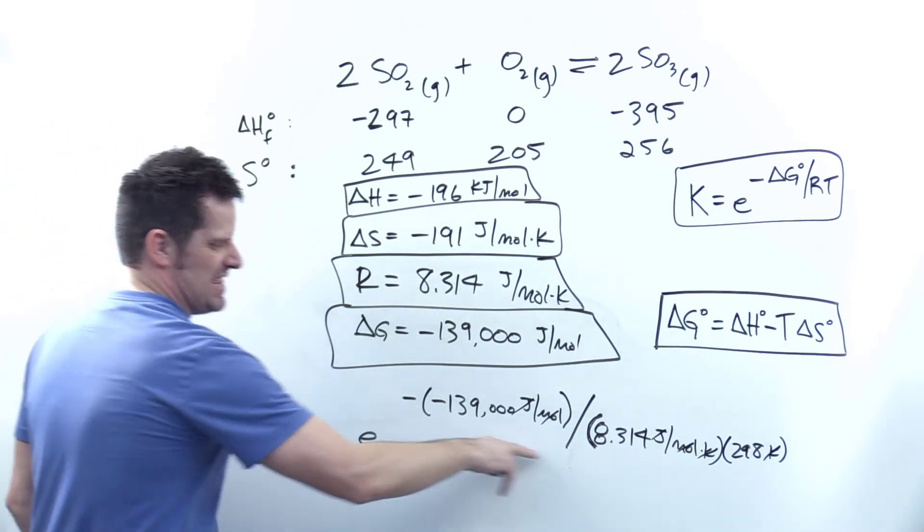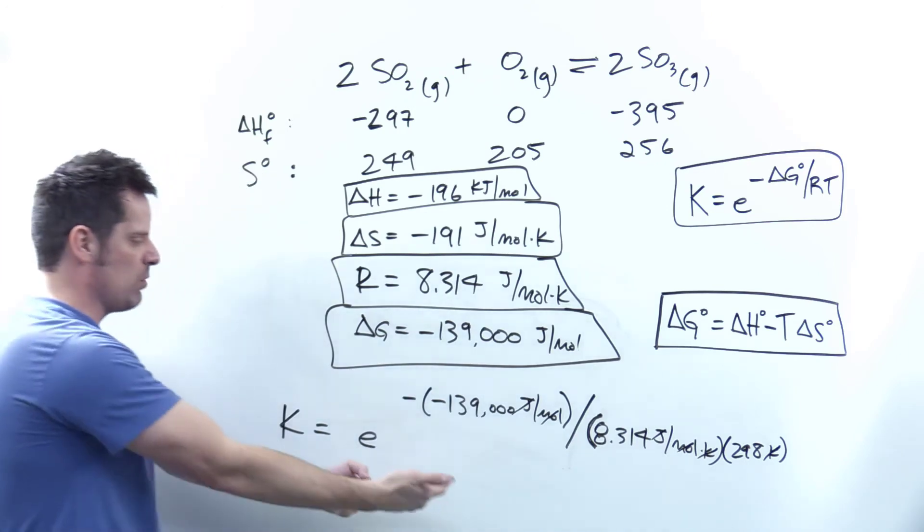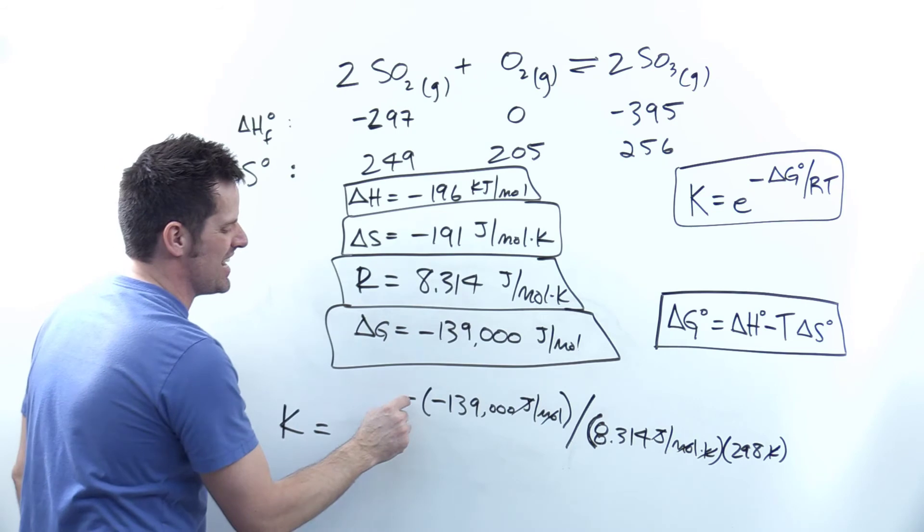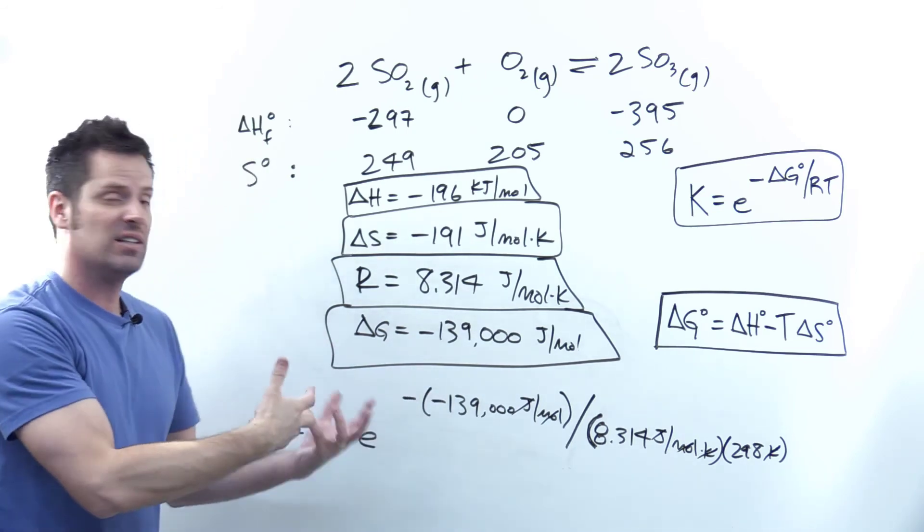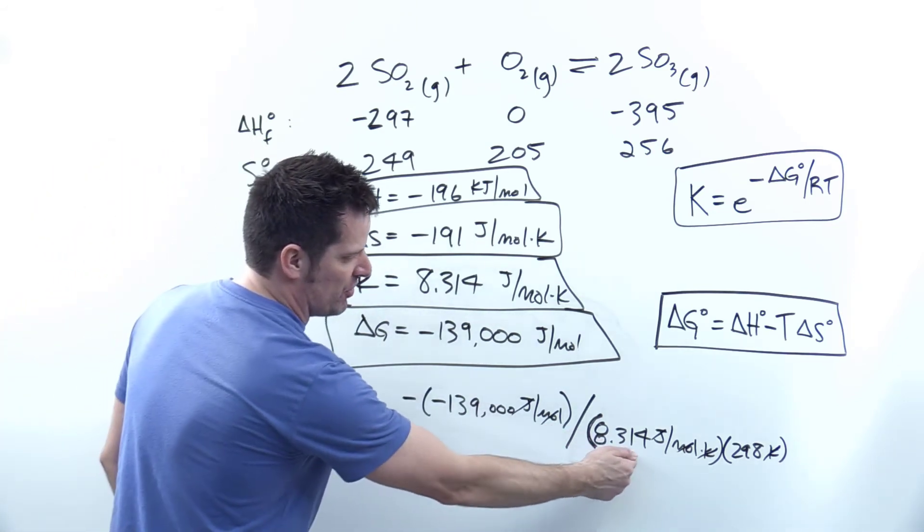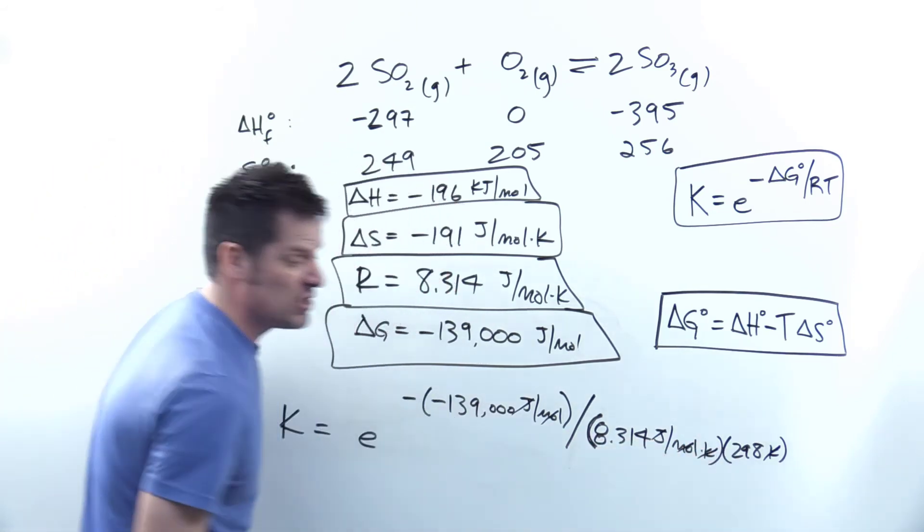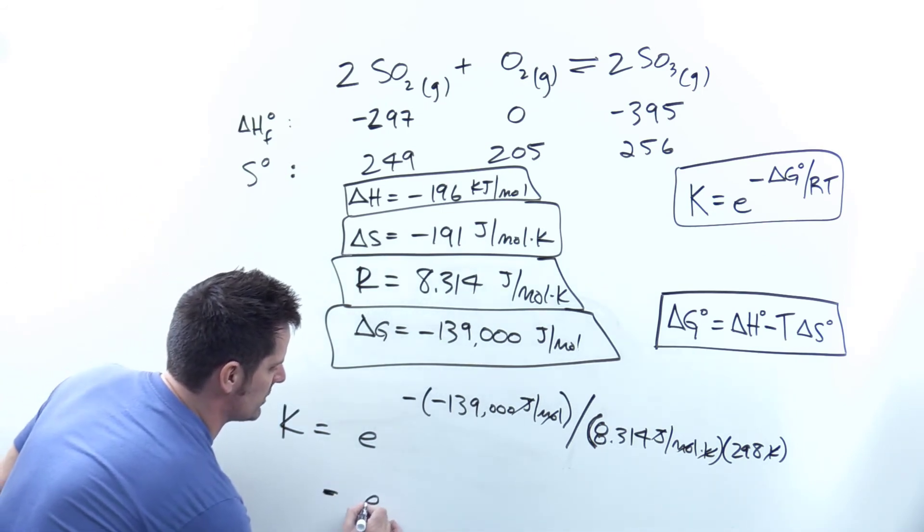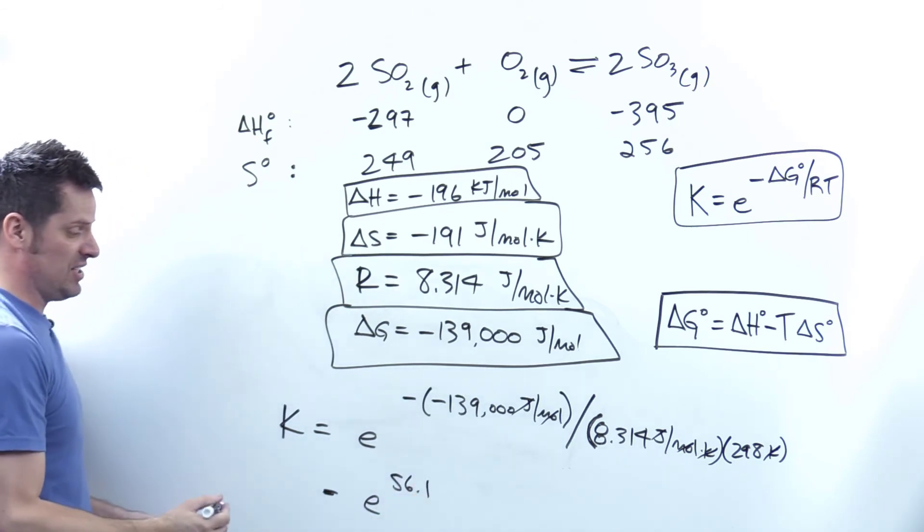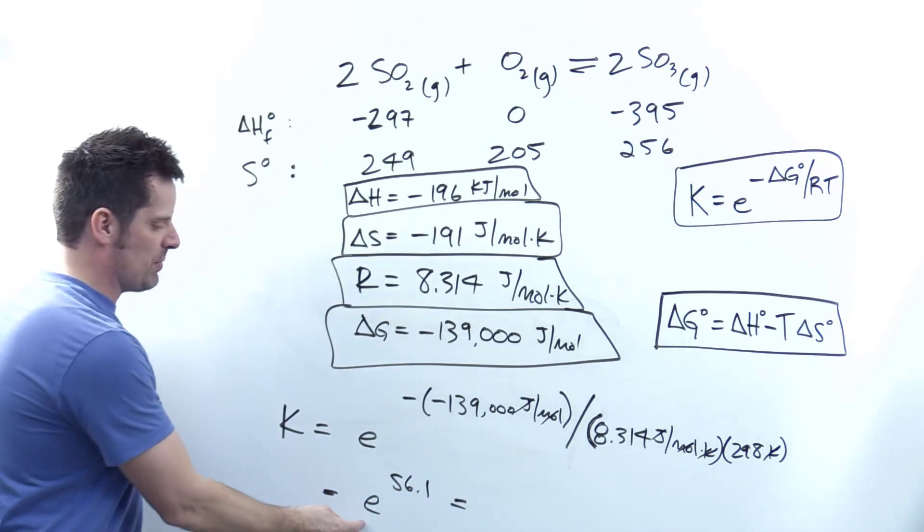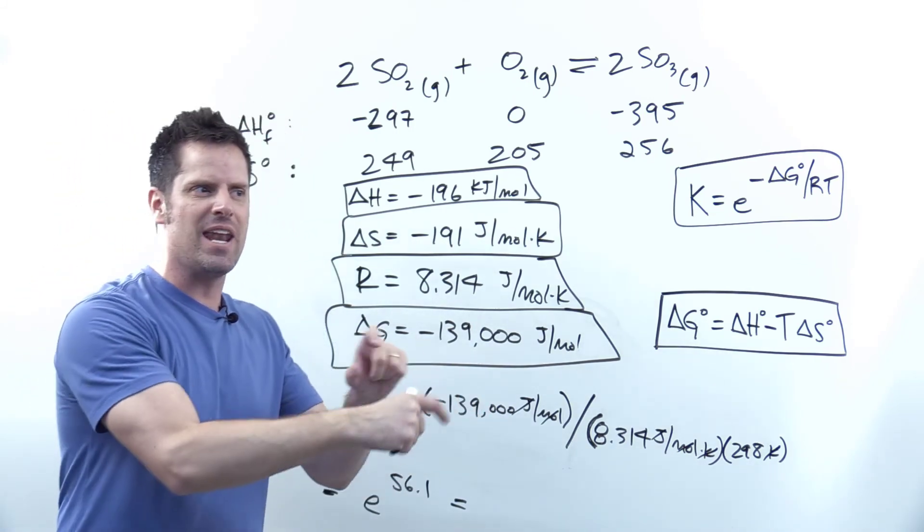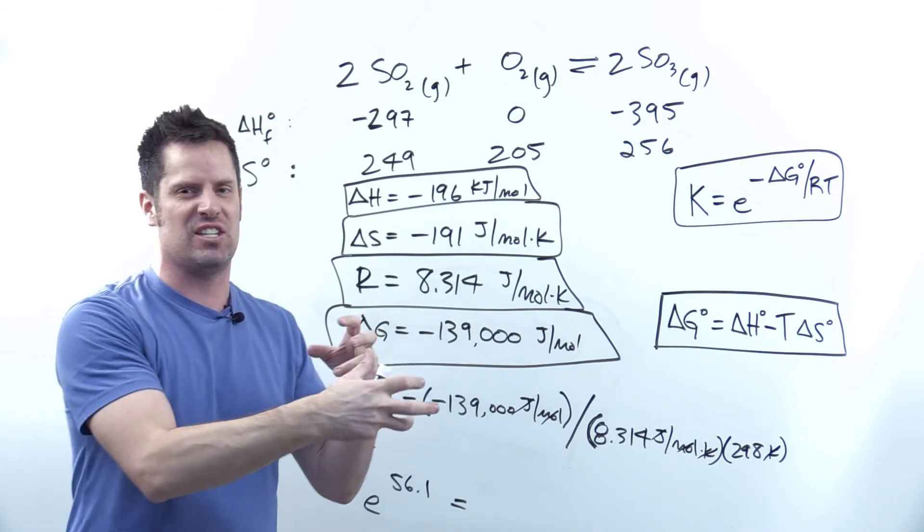Simplify this term first, then raise Euler's number to that value. Don't forget this is a negative of a negative, so they cancel leaving a positive term. I have 139,000 divided by 8.314 multiplied by 298, which gives 56.1. I'll take Euler's number and raise it to 56.1. Euler's number is usually attached to the natural log button.